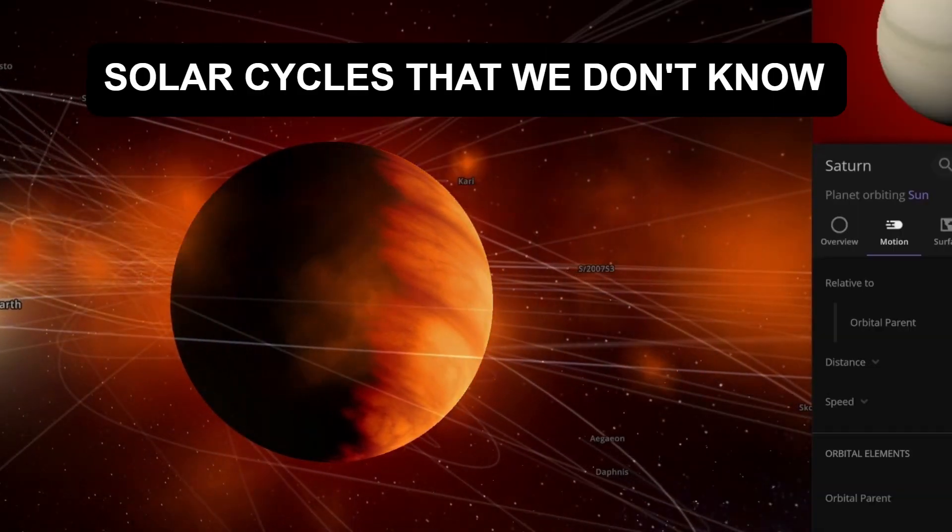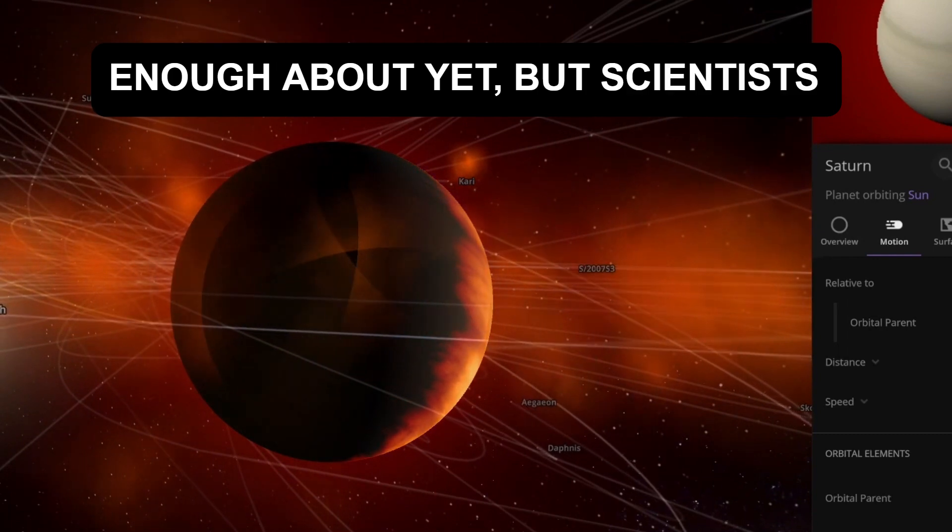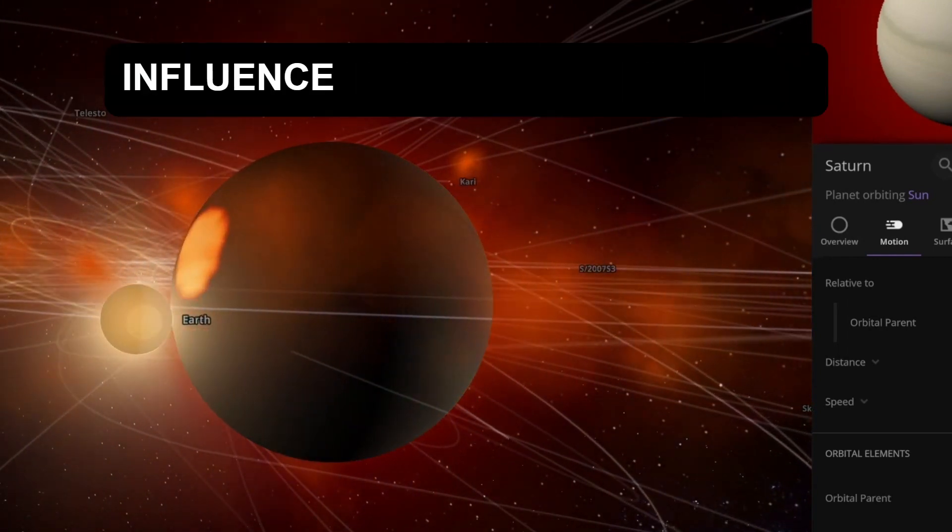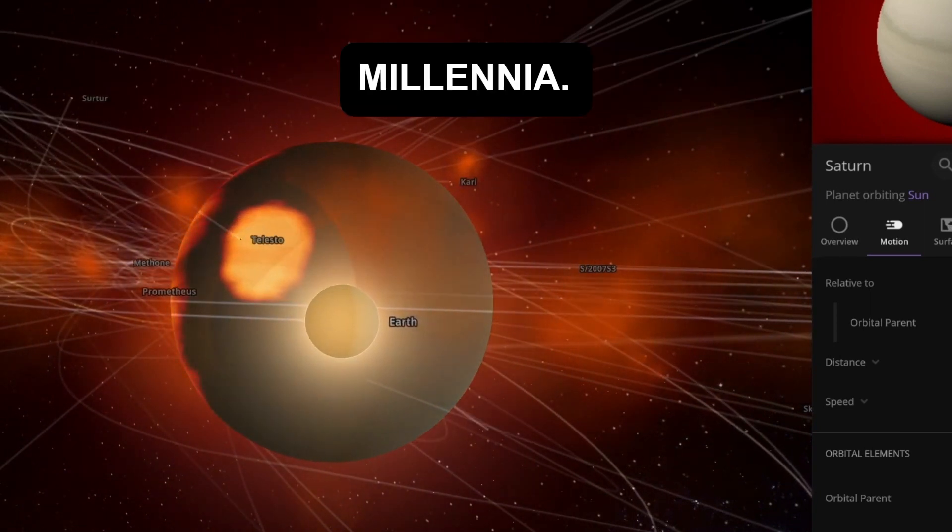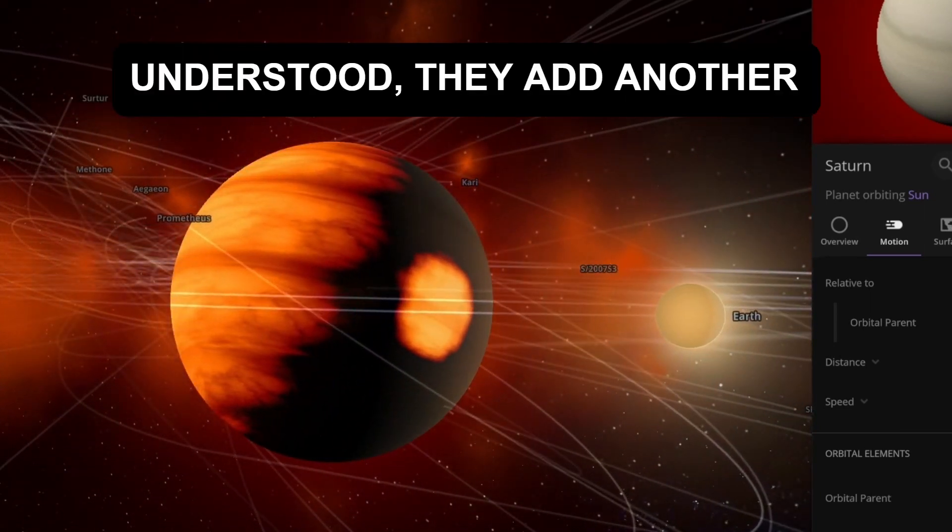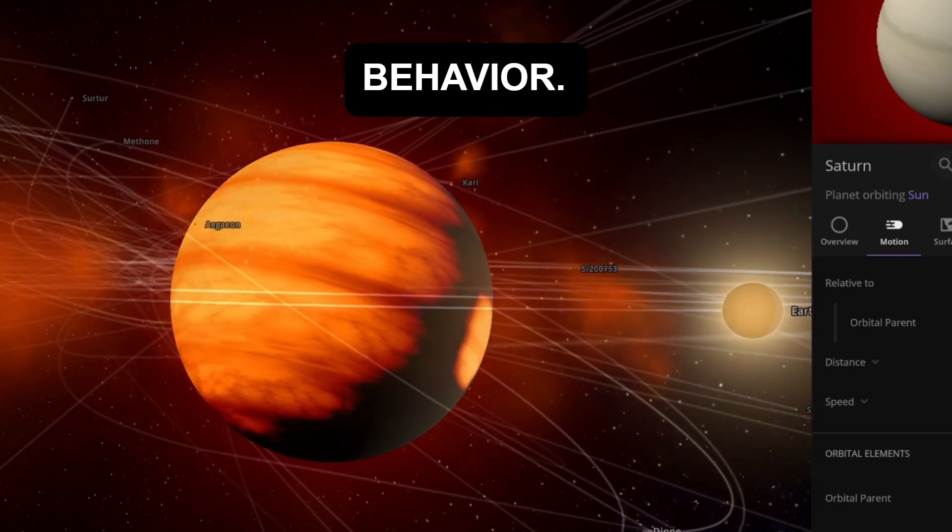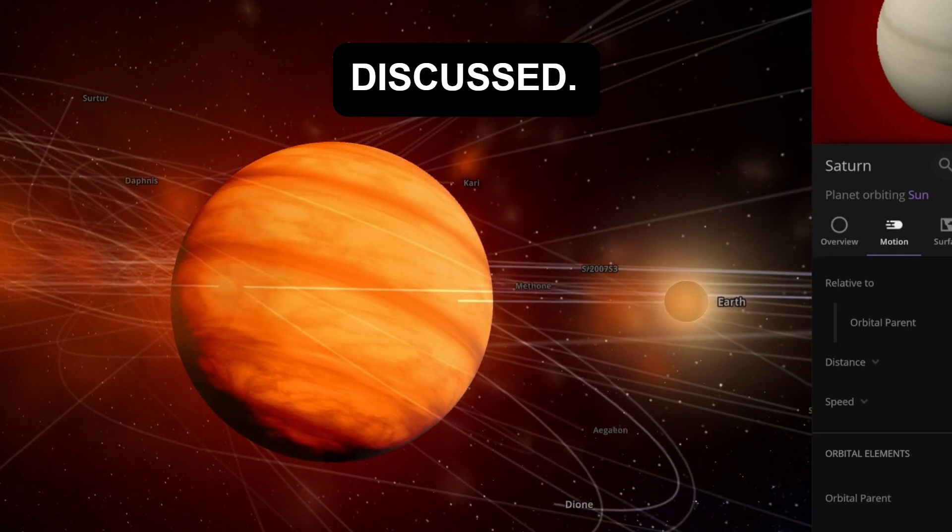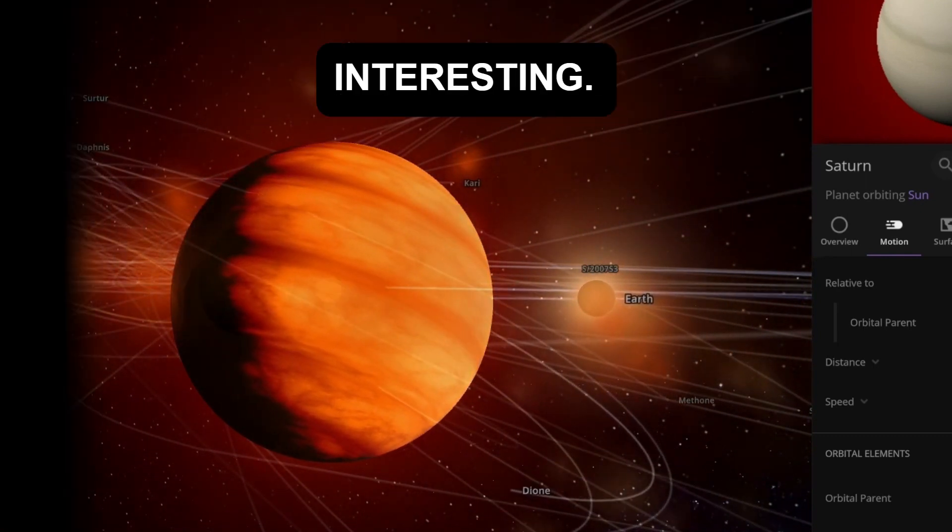And there are other theorized solar cycles that we don't know enough about yet, but scientists have theorized about longer solar cycles that could influence solar activities over millennia. While these cycles aren't as well understood, they add another layer to the sun's complex behavior. Imagine if these longer cycles coincided with the ones we've discussed. Things could get really interesting.